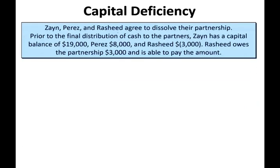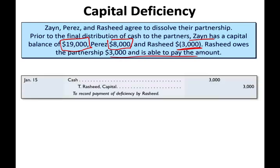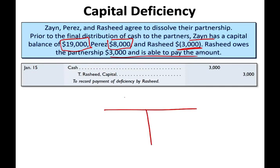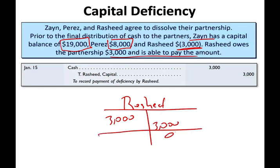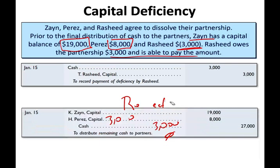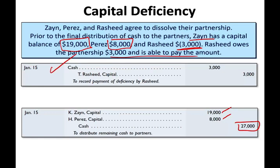Let's look at an example. We have Zane, Perez, and Rashid, who agreed to dissolve their partnership. Prior to the final distribution of cash: Zane has a capital balance of $19,000 (positive), Perez of $8,000, and Rashid of negative $3,000. Rashid owes the partnership $3,000. If Rashid is able to pay it, they contribute $3,000 cash — crediting their capital balance by $3,000 — bringing it to zero. They satisfied their obligation and can move out. What's left — $27,000 — goes to the other partners: $19,000 to Zane and $8,000 to Perez. Rashid was able to cover the deficiency, which is good news for the other two partners.